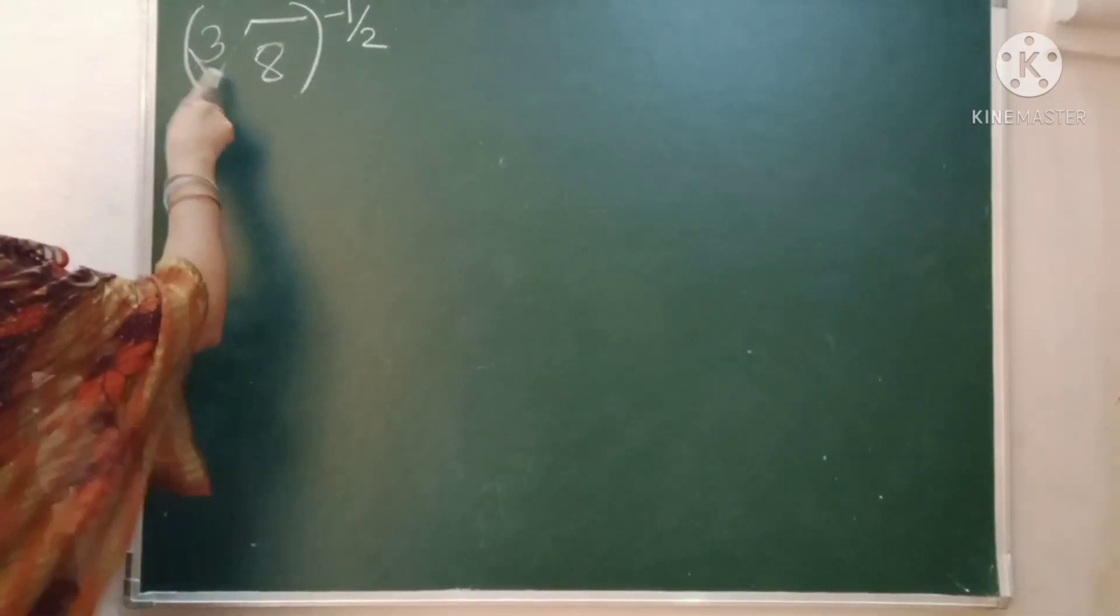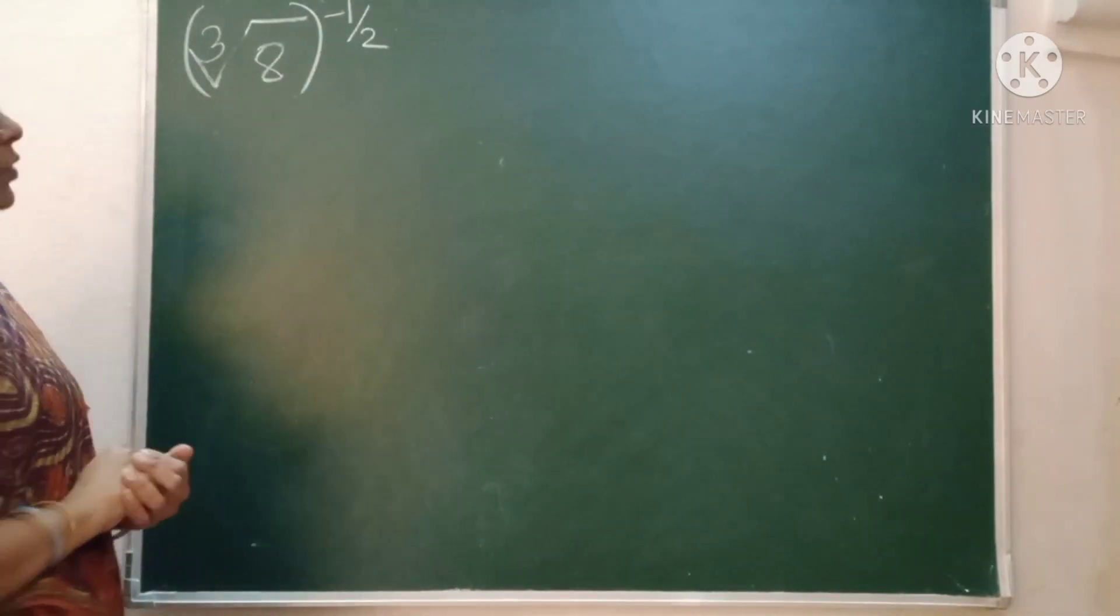Okay, this is something I have discussed. Q root of 8 is equal to minus 1 by 2. How to simplify this one?